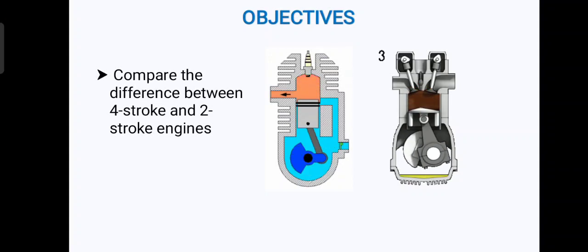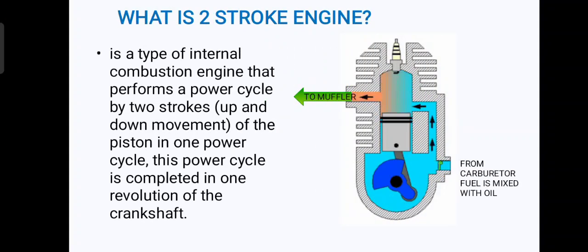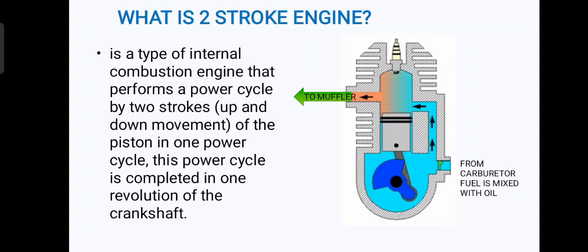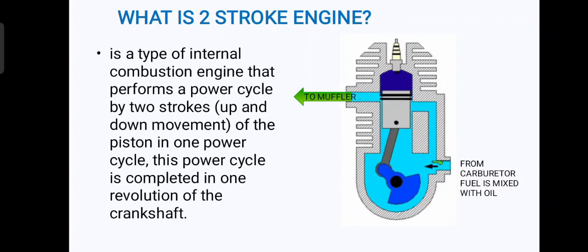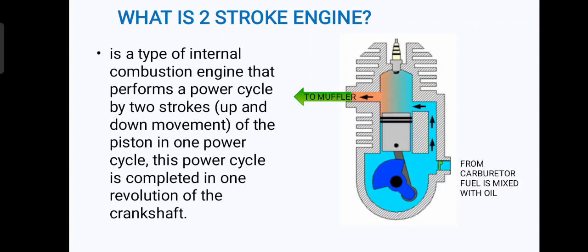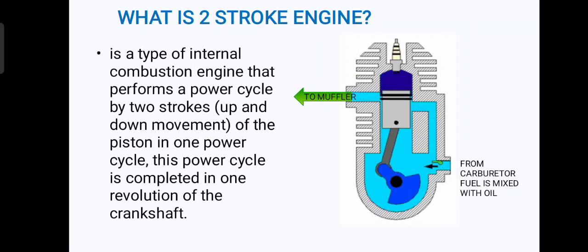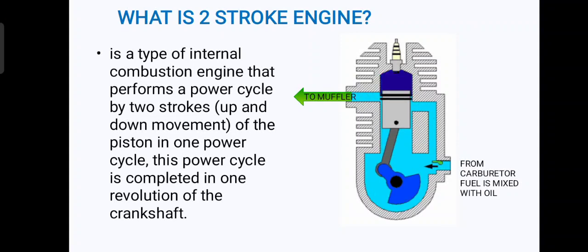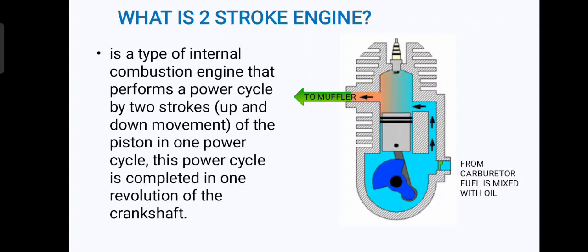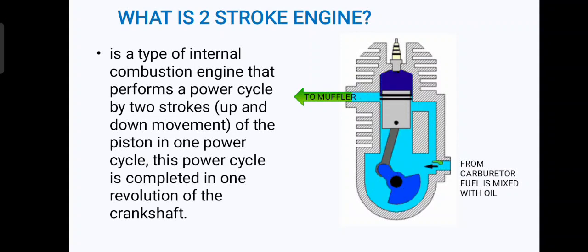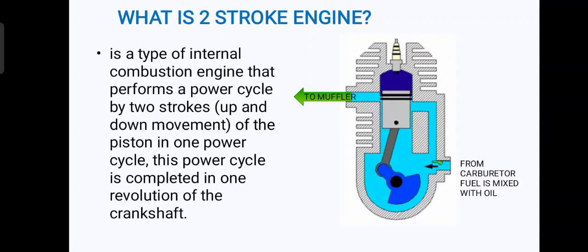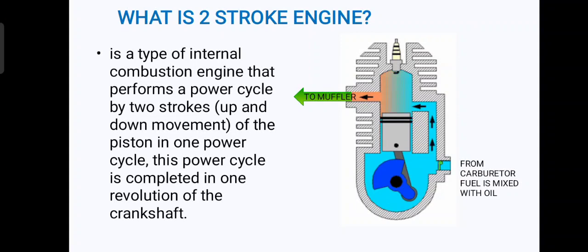So, what is a two-stroke engine? A two-stroke engine is a type of internal combustion engine that performs a power cycle by two strokes — the up and down movement of the piston — in one power cycle. This power cycle is completed in one revolution of the crankshaft.